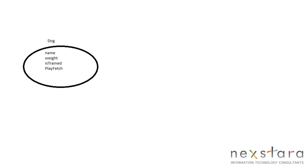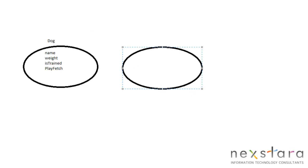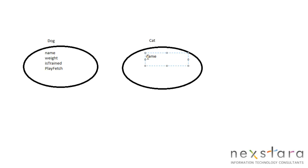Let's also say we're programming a kid's game, so maybe we'll have a Cat. A cat will also have a name and maybe a weight. And a field: SharpClaws. Cats can purr — that's unique to a cat.